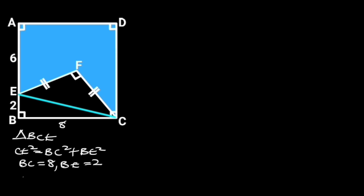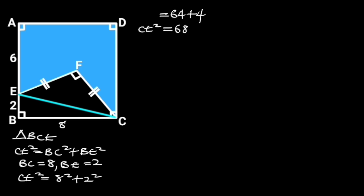And BE is equal to 2. Substituting these values in the formula will give us: CE squared is equal to 8 squared plus 2 squared. 8 squared is equal to 64, and 2 squared is equal to 4. 64 plus 4 is equal to 68. So CE squared is equal to 68. Taking the square root of both sides gives us CE is equal to 2√17.